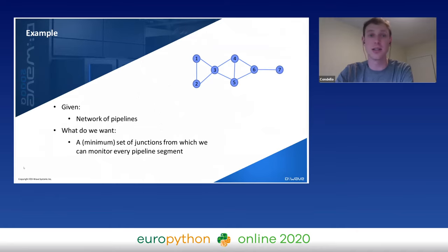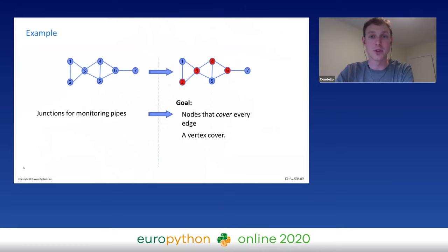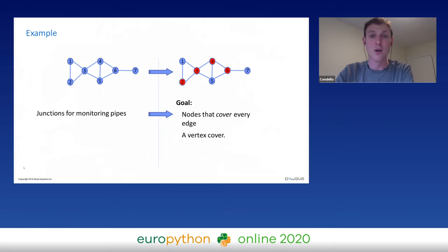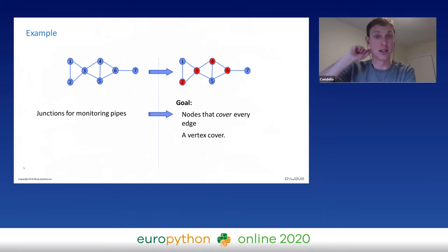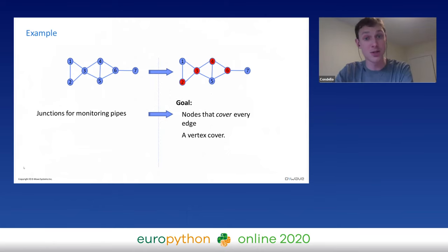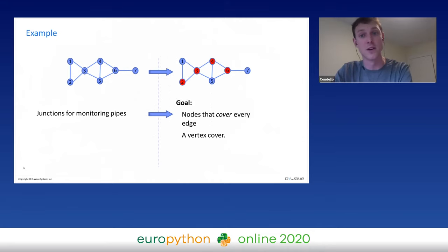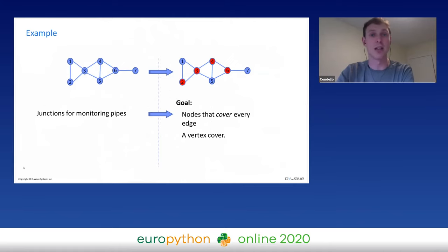Here on the right-hand side you can see an example of this so-called minimum cover, where from each of those different locations every single pipe is adjacent to at least one of those red junctions. It's important to note that there are other options — for instance, we could have a monitoring station at node one instead of node two. The point is to find some minimum set, the smallest number of locations from which we can monitor every junction.